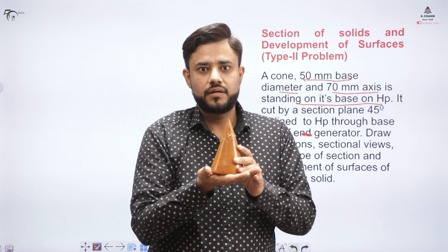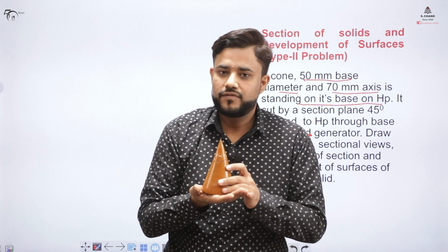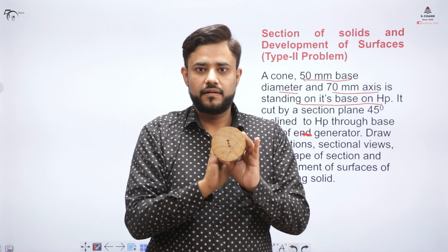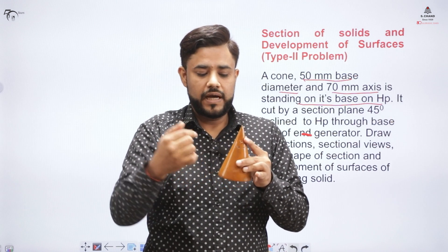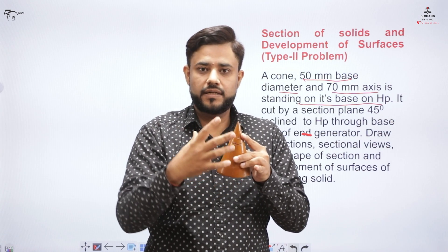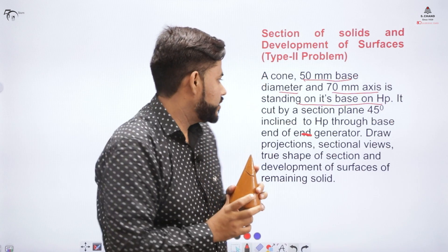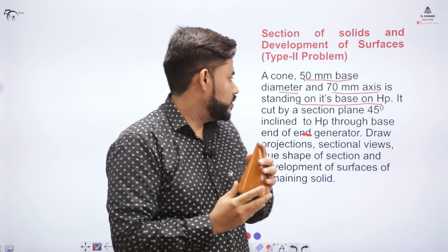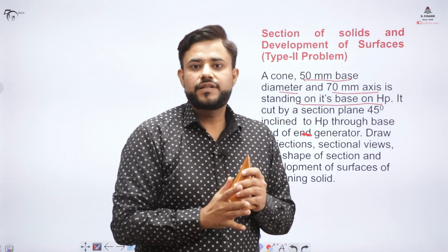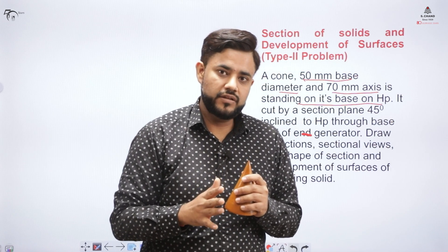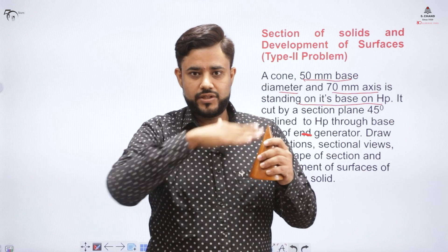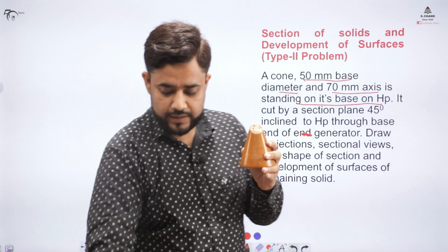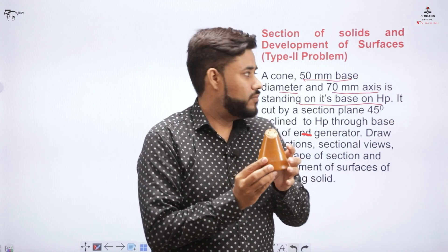First, we make the top view and the front view of the object. Looking at the cone from the top gives a circle, and from the front gives a triangle. The section is cut at 45 degrees to the horizontal plane, so the cut appears in the front view. After cutting, you get the sectional front view shape.